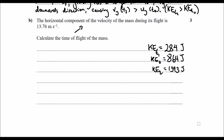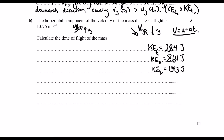We need to find the resultant velocities first. From there we can find the initial vertical velocity and the final vertical velocity. Then using the equation v = u + at, we can find the value of time and add the two values together to find the total flight time.